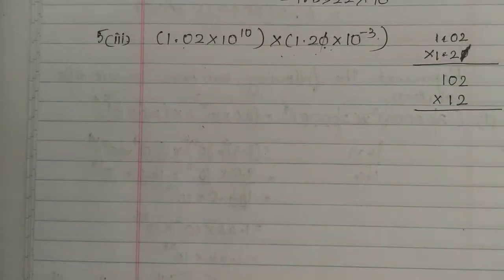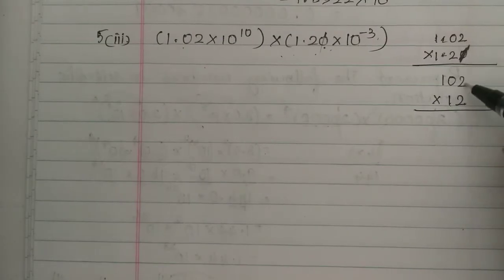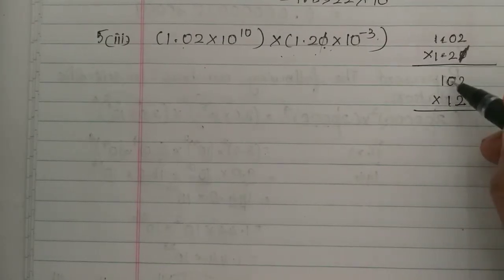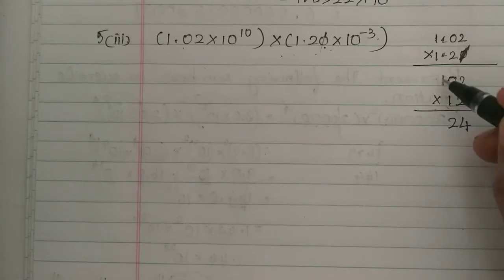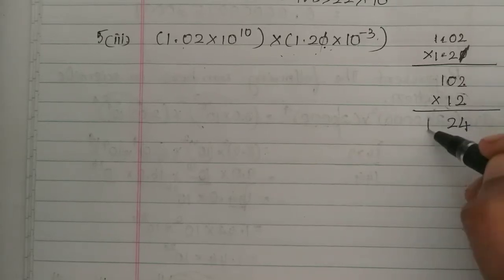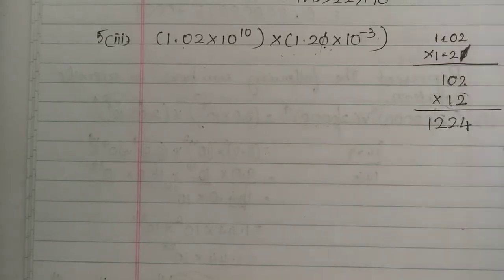You can multiply by 12. So: 12, 2s are 24; if you have 0, multiply by 24. Then 12, 1s are 12. So 1, 2, 2, 4 — that is 1224, which is 3 decimal numbers.